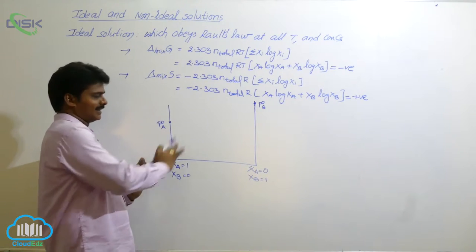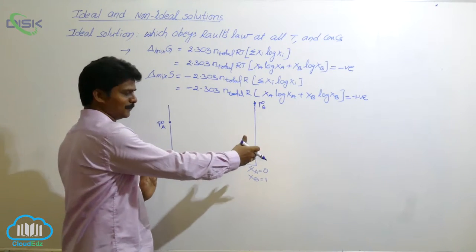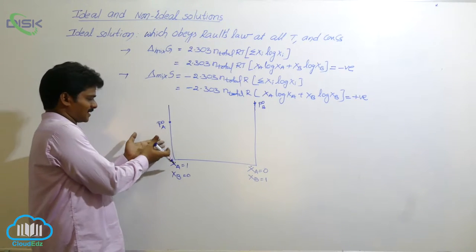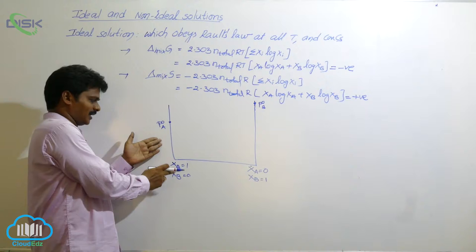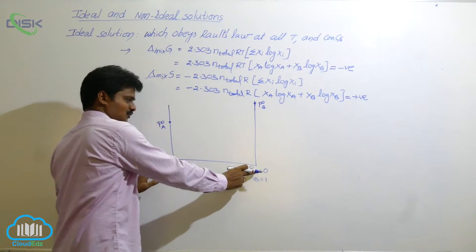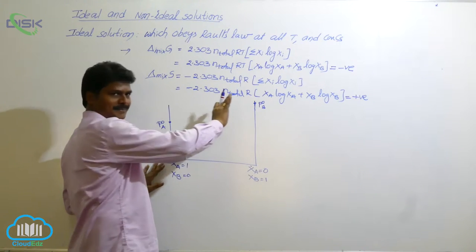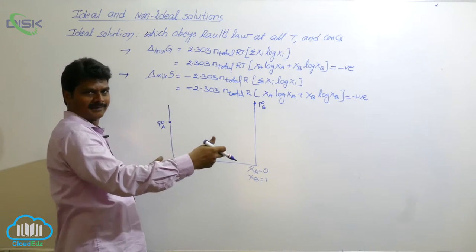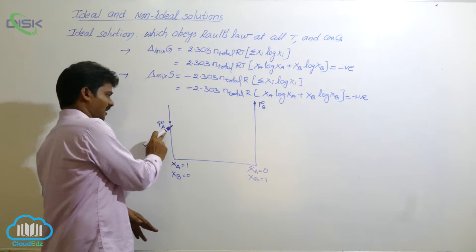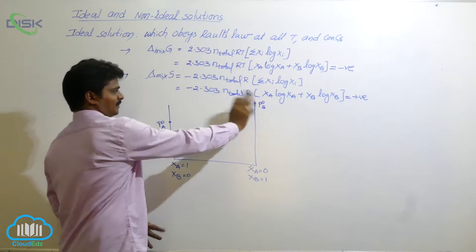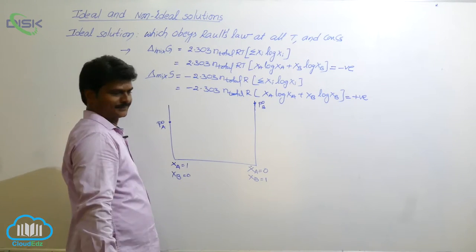Here, only component A is present; that side will be pure B. So, here only component B is present. The pure component vapor pressure is E°A on this side and E°B on that side.